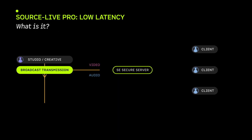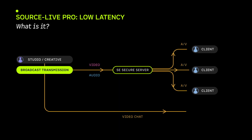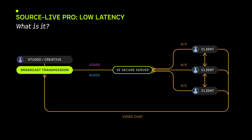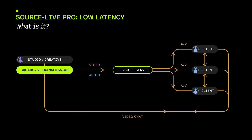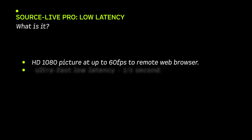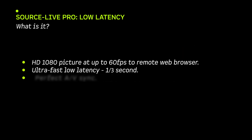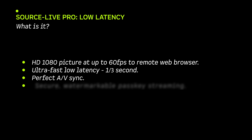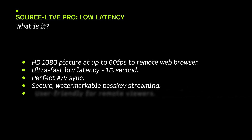SourceLive Pro Low Latency has smooth HD pictures with professional frame rates and tight AV sync, with a high quality audio stream free from time, frequency and echo cancellation artefacts. It uses secure servers with passkey protection and picture watermarking.